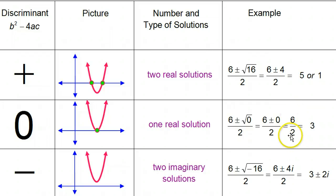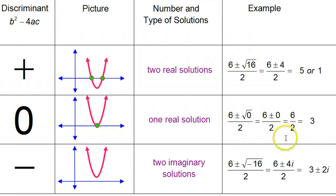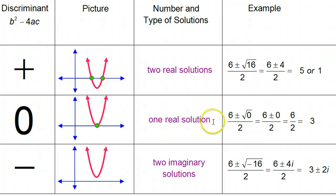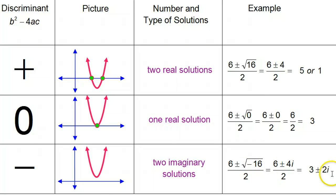That's why I only get one solution when the discriminant is zero, because I'm not adding or subtracting anything. It would just be six over two, which is three — one solution. I don't want you to feel like you need to memorize a chart. If you understand: of course, if it's positive you'll have two solutions via plus/minus; of course, if it's zero you're not adding or subtracting anything so just one solution; and of course, if the discriminant is negative, that means you have a negative number underneath a radical, so you'll get two imaginary solutions because you're adding and subtracting i.